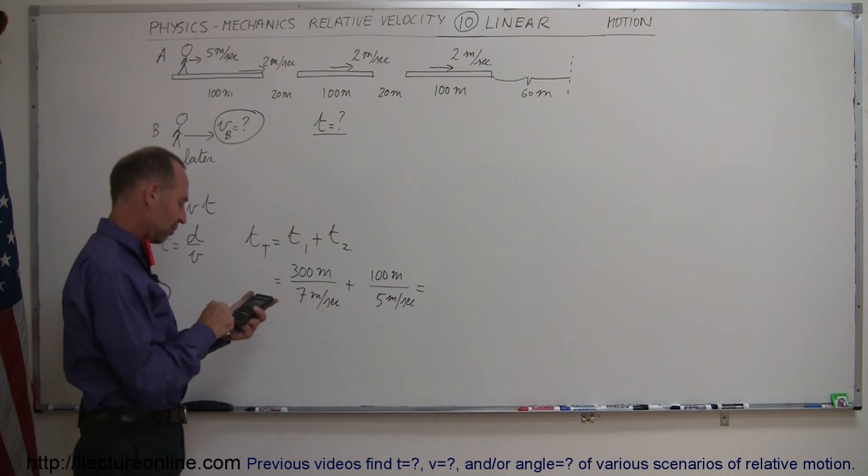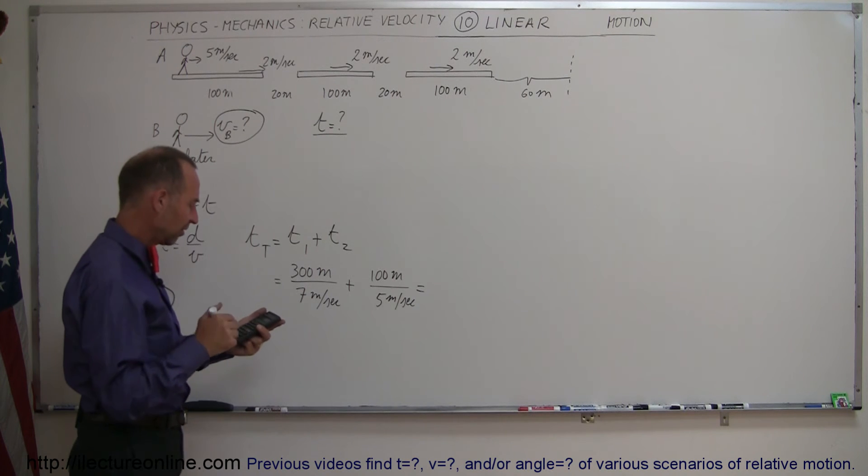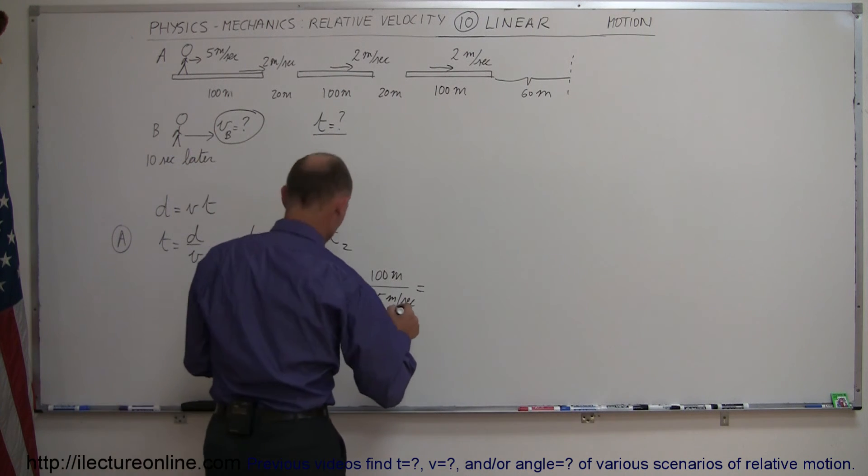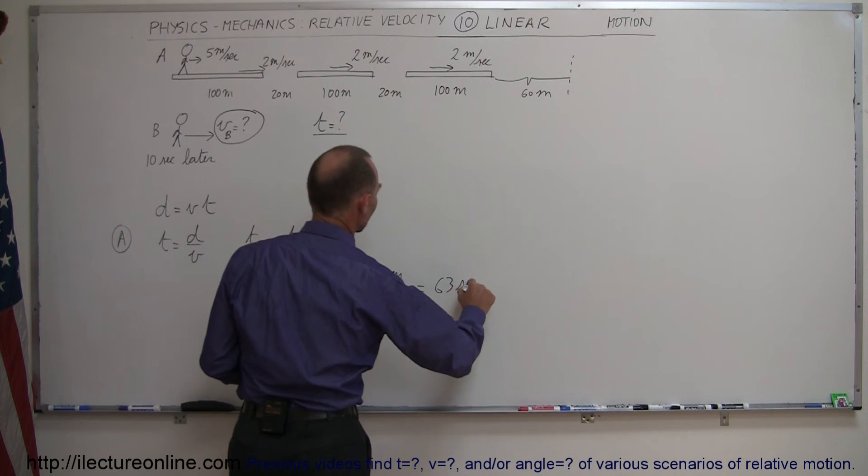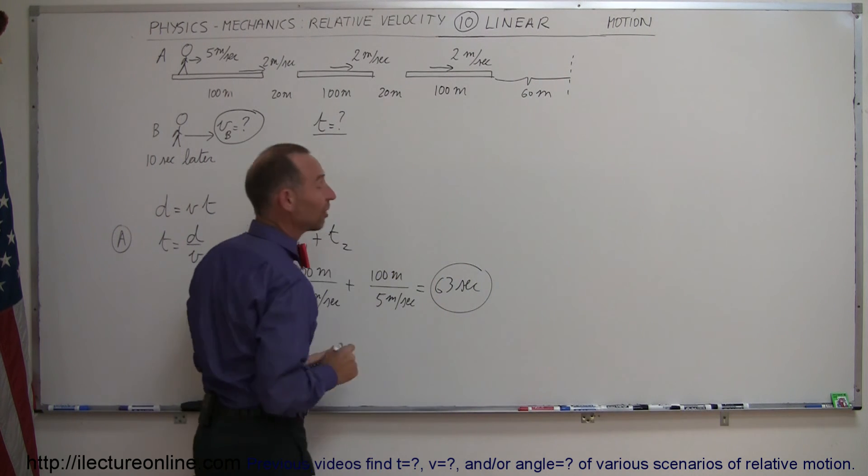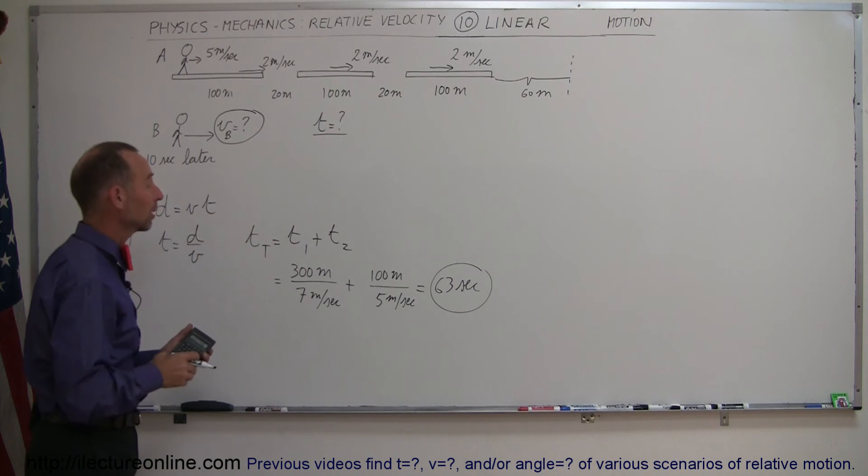All right, so we have 300 divided by 7, that's 42.8, plus 100 divided by 5 equals 62. 62.9, let's call it 63 seconds. 63 seconds is the total time passenger A has to make the boarding area.